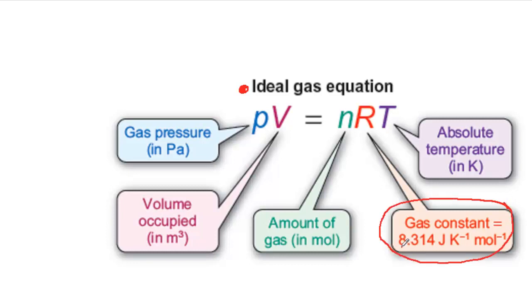Normally, you'll be using the SI value, which is 8.314 joules per kelvin per mole. And if you're using that value, then your pressure will be in pascals. And remember that 1 pascal is equal to 1 newton per square meter.